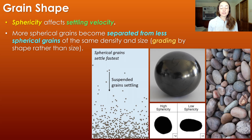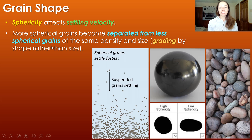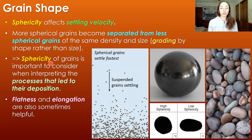First and foremost, sphericity — or how spherical a grain is. Sphericity of a grain heavily affects its settling velocity and basically any transport that it goes through. For this reason, many spherical grains become separated from less spherical grains of the same density and size, therefore grading or sorting the sediment based on shape rather than size. Sphericity is important to consider when interpreting the processes that led to the deposition of those grains.